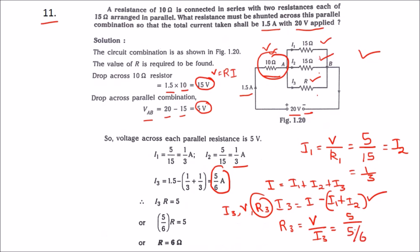Simplifying, we get the value of R as 6 ohms.